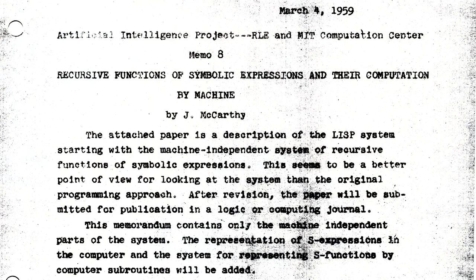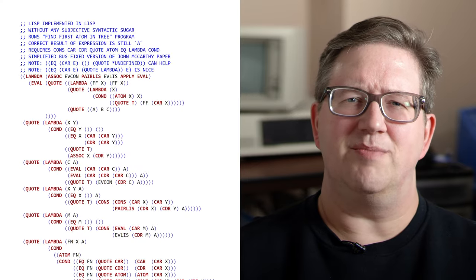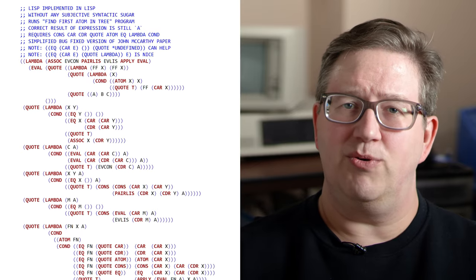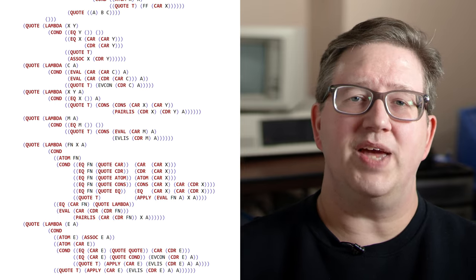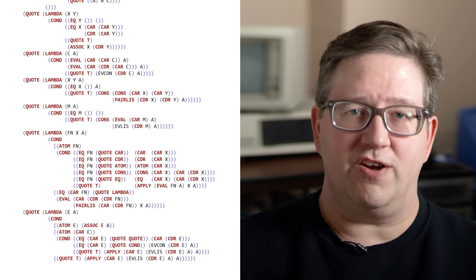Lisp is considered the second oldest high-level language, created in 1958. The only language older than that is Forth, and that's only by one year. A lot of classic language features can be traced all the way back to Lisp, such as recursion, tree data structures, dynamic typing, and higher-order functions — the latter of which are cornerstones of modern languages like Python and JavaScript. Another crazy thing about Lisp is that a Lisp interpreter can be written in about 45 lines of Lisp code, which has prompted people to describe Lisp as the Maxwell's equations of software. Some of that is over my head.